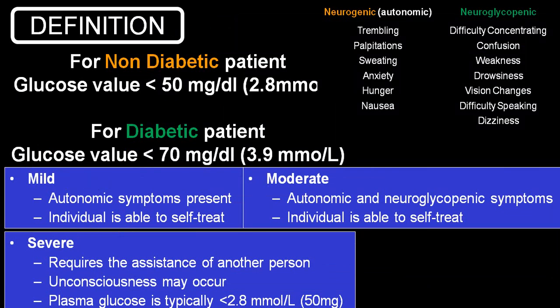By definition, there are figure changes in the value of sugar in blood. In a non-diabetic person, if blood sugar is less than 50 mg/dL (2.8 mmol/L), we label that as hypoglycemia. While in a diabetic person, it is less than 70 mg/dL (3.9 mmol/L). So non-diabetic less than 50, diabetic less than 70. With or without symptoms, which we divide into two big groups: autonomic or neuroglycopenic.